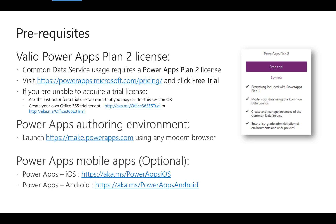If you don't have one of these accounts, you can sign up for an Office 365 trial and then you should be able to register for a PowerApps Plan II license. You can use an Outlook or Gmail account for this. You will also need to provide a valid phone number for verification.